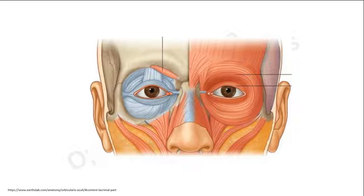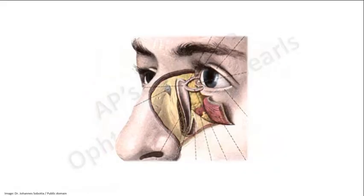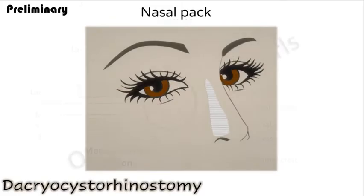To approach the lacrimal fossa, beneath the skin is the orbicularis oculi. When the fibers of the orbicularis are separated, one can see the medial canthal tendon, which acts as an insertion for the palpebral fibers of the orbicularis and inserts into the medial wall of the orbit. Beneath that is the periosteum, called the lacrimal fascia, which engulfs the lacrimal sac. Here you can see the lacrimal sac beneath the medial canthal tendon.